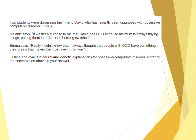Then move to AO1 of the genetic explanation: the CERT gene and specific genes involved, its link to low levels of serotonin, family studies indicating a genetic link, and concordance rates. Also mention Taylor's suggestion that it may not be one gene but polygenic — up to 230 genes. The AO2 paragraph would note that Melanie suggests David inherited OCD from his mother — his mum always tidying implies he may have inherited it.